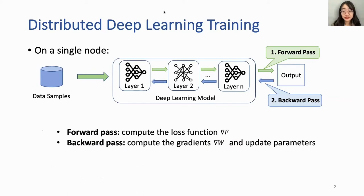Here we discuss the training process. When training neural networks, there are two paths. The green arrows are the forward path: data samples are passed through the model, computing the loss function from the first layer to the last layer. Then, the blue arrows represent the backward path, from the last layer to the first layer, computing gradients and updating parameters.